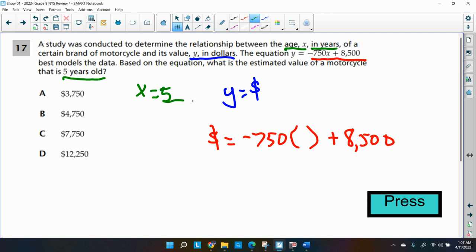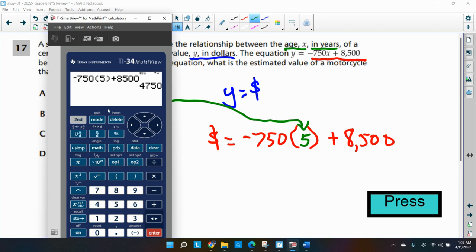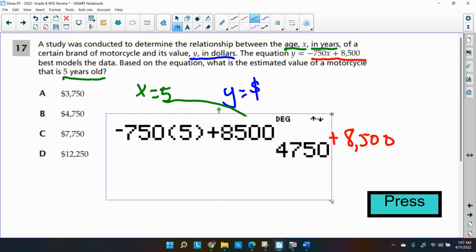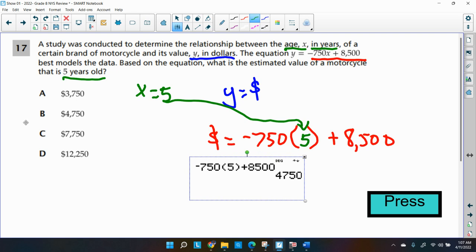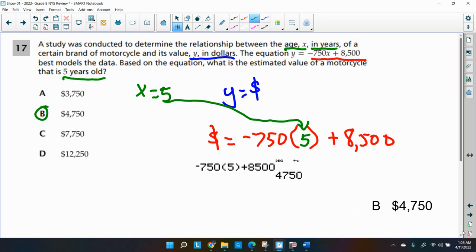Your dollars will be equal to negative 750 times the value of X plus 8,500. So we said X was five, so let's put in the five and get our calculator to help us calculate the value. I got negative 750, parenthesis, five, parenthesis, plus 8,500. Press enter. And I get $4,750, which is the value of the motorcycle after five years. So I'm going to pick choice B. That was pretty good and straightforward. Choice B, $4,750. So let's keep going. We've got one more question.